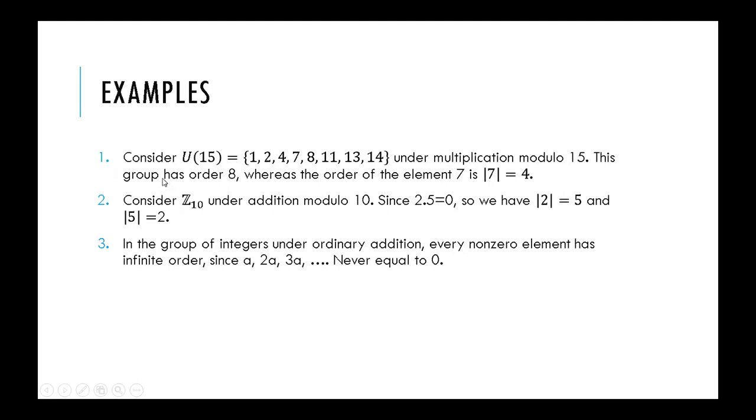Let us discuss some examples. Consider U(15), which is the set of positive integers less than 15 which are relatively prime with 15. So they have gcd equal to 1 with 15. We have eight elements in this group: 1, 2, 4, 7, 8, 11, 13, 14. We are considering this group under multiplication modulo 15. As this group has eight elements, its order is 8, whereas the order of the element 7 is 4.